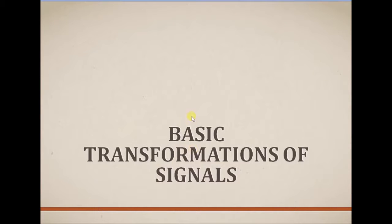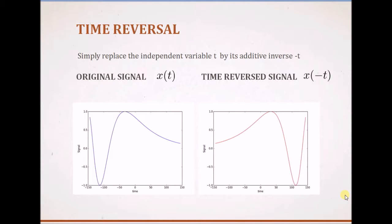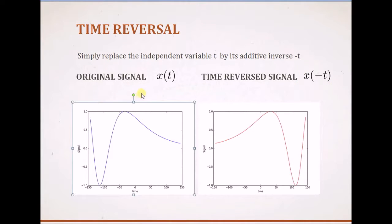Hello, welcome. In this short video, let us look at some basic transformations of signals. The first one is time reversal. In this case, the independent variable is assumed to be time; if the variable is space, then it becomes a reflection. In this example, we can determine the time-reversed signal of the original signal by replacing t with minus t. This signal has a trough at a value close to minus 100 and a peak.